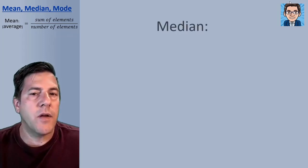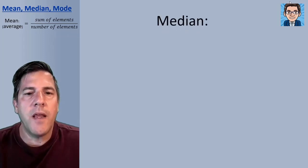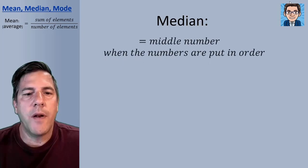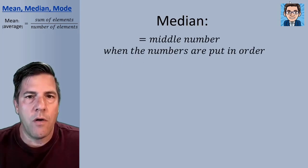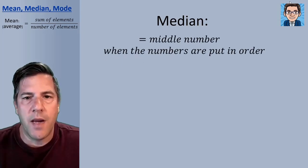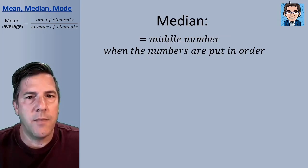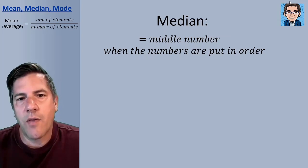Next let's take a look at median. The median is simply going to be the middle number. When we take all the numbers and put them in order, the middle number is going to be the median. So half the numbers are going to be less than the median, and half the numbers are going to be greater than the median.